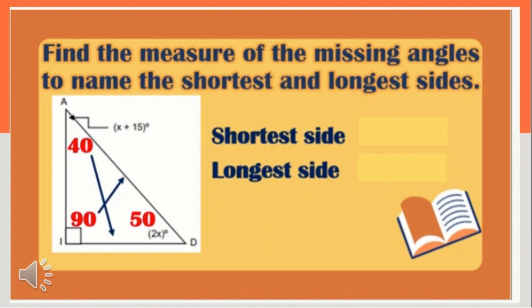Now let's identify the shortest and longest sides of the triangle. The smallest angle is 40 degrees, which is angle A. The opposite side of angle A is line segment ID, so the shortest side is line segment ID. The largest angle is 90 degrees, which is angle I. The opposite side of angle I is line segment AB. Therefore, the longest side is line segment AB.